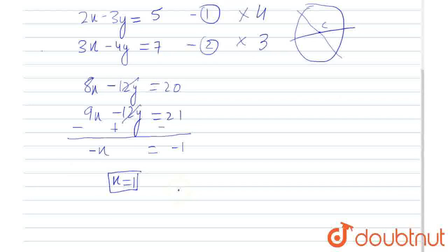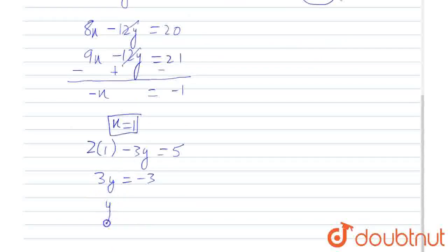And that is how we can find the value of y also by putting this value of x. So, 2 times x minus 3y equals 5, then 3y equals minus 3, and y equals minus 1.